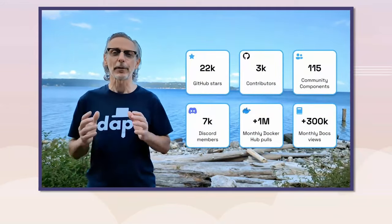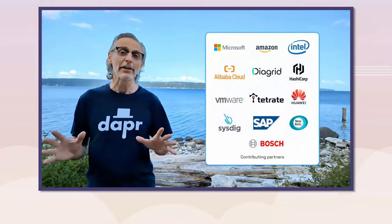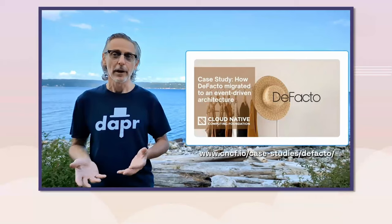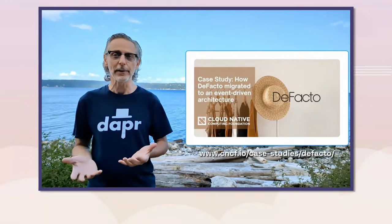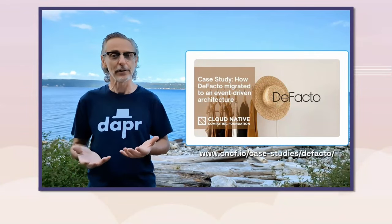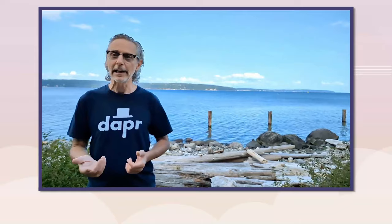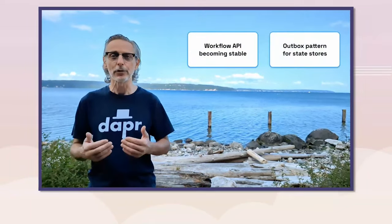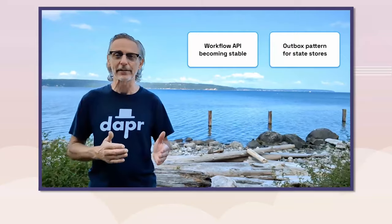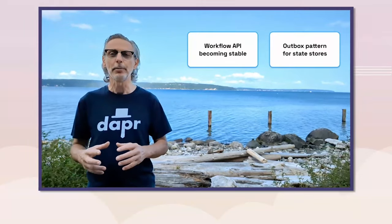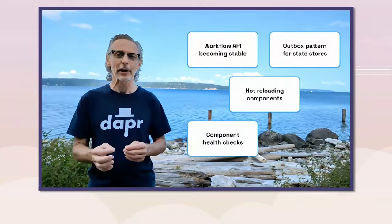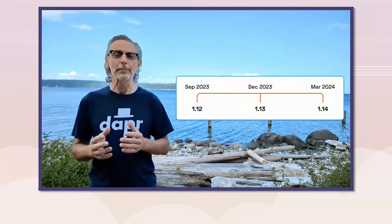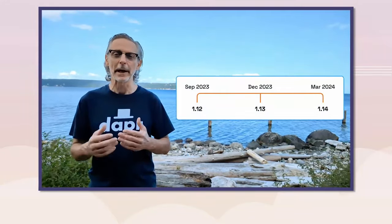We've now crossed over 3,000 contributors from a wide spectrum of organizations. Read a case study about DeFacto describing how they migrated to an event-driven architecture leveraging Dapr. Features to highlight include the Workflow API on a path to stable, the outbox pattern to transactionally sync state with messaging, and component improvements to include hot reloading, health checks, and pluggable secret stores. With the latest v1.12 release out, expect much more from the upcoming releases.